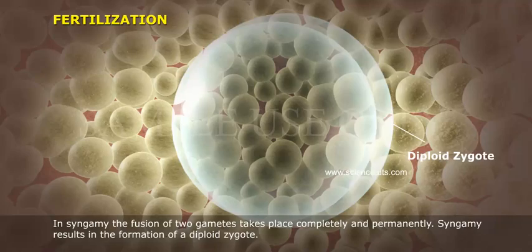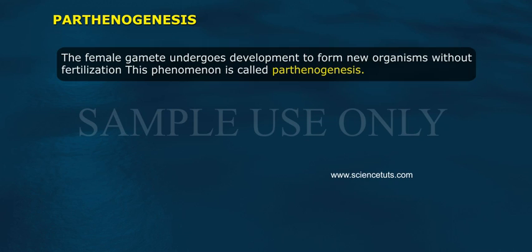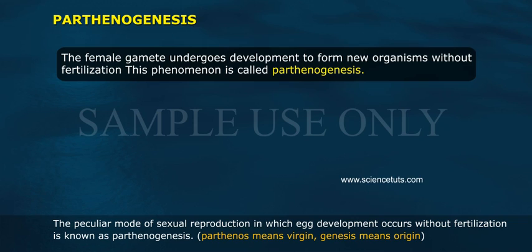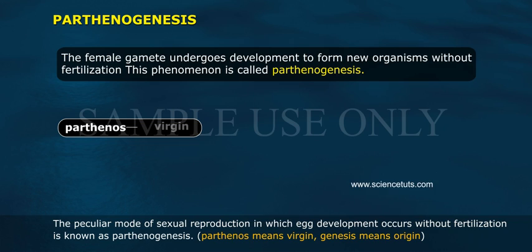Parthenogenesis. The female gamete undergoes development to form a new organism without fertilization. This phenomenon is called parthenogenesis — a peculiar mode of sexual reproduction in which egg development occurs without fertilization. The word is derived from 'parthenos', meaning virgin, and 'genesis', meaning origin.